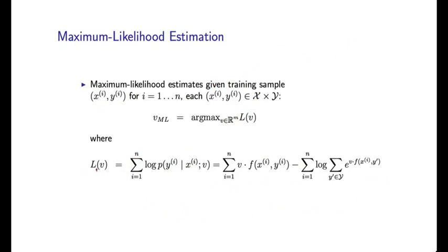Before we get to that, I want to talk about one critical property of L of v, which is the following. L of v is concave. And this means, essentially, it is a very nicely-behaved function.